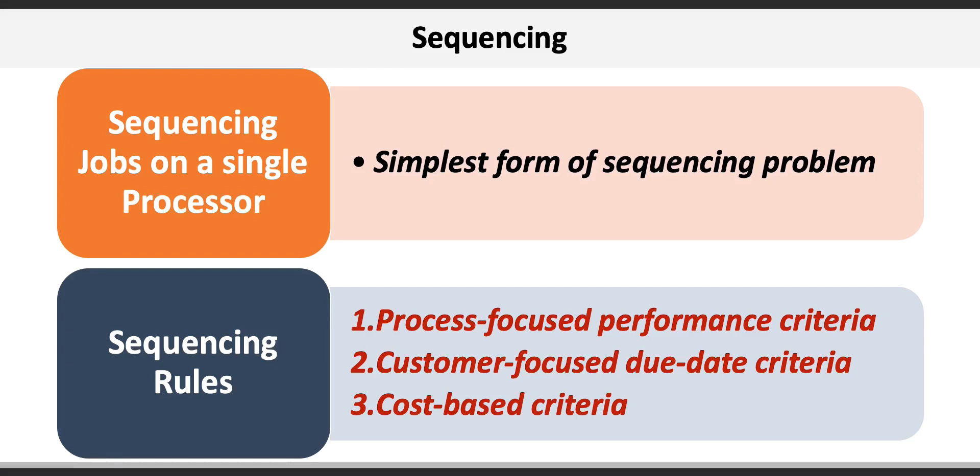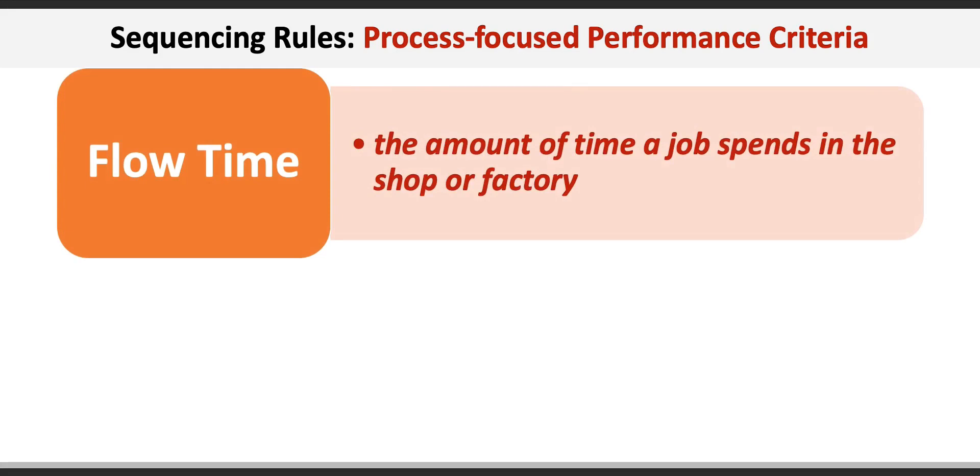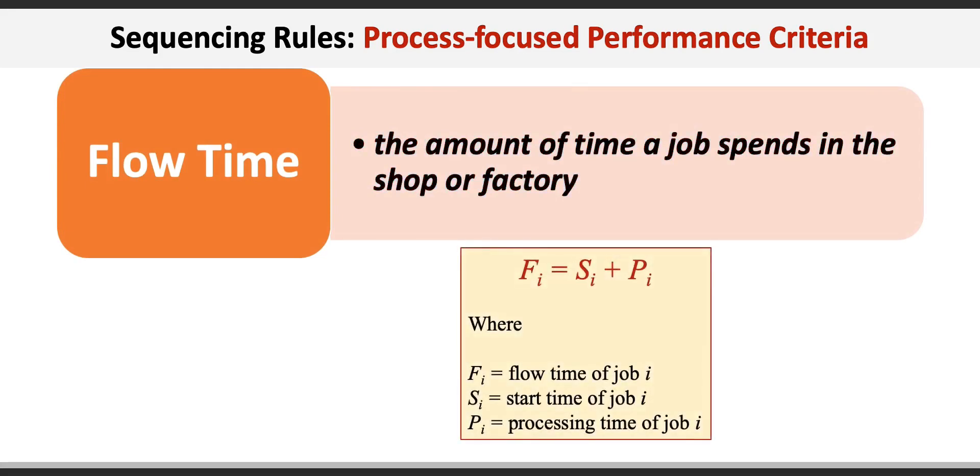The first is process-focused performance criteria. The second is customer-focused due date criteria, and the third is cost-based criteria. Process-focused performance criteria pertain only to information about the start and end times of jobs and focus on shop performance such as equipment utilization and work-in-process inventory. Two common measures are flow time and makespan. Flow time is the amount of time a job spends in the shop or factory and can be calculated using a simple formula: fi = si + pi, where fi is the flow time of job i, si is the start time of job i, and pi is the processing time of job i.